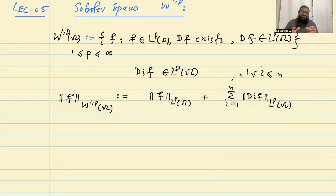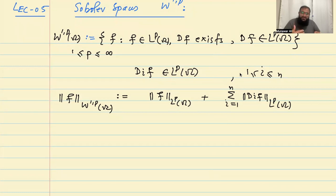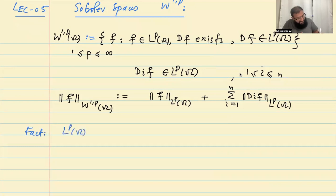Based on this norm, we can say that this Sobolev space is a normed space. After establishing the norm, we can ask whether this space is complete or not. If the space is complete, we call it a Banach space. The completeness can be inherited from Lp spaces, and we discussed in the previous lecture that Lp spaces are Banach spaces.